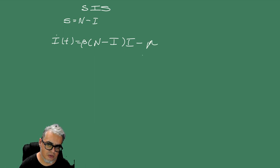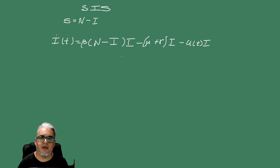mu más gamma por I, menos U de t por I. En este caso la mu es una tasa de mortalidad, la gamma es una tasa de recuperación, pero esta U de t representa el control, que es el tratamiento.